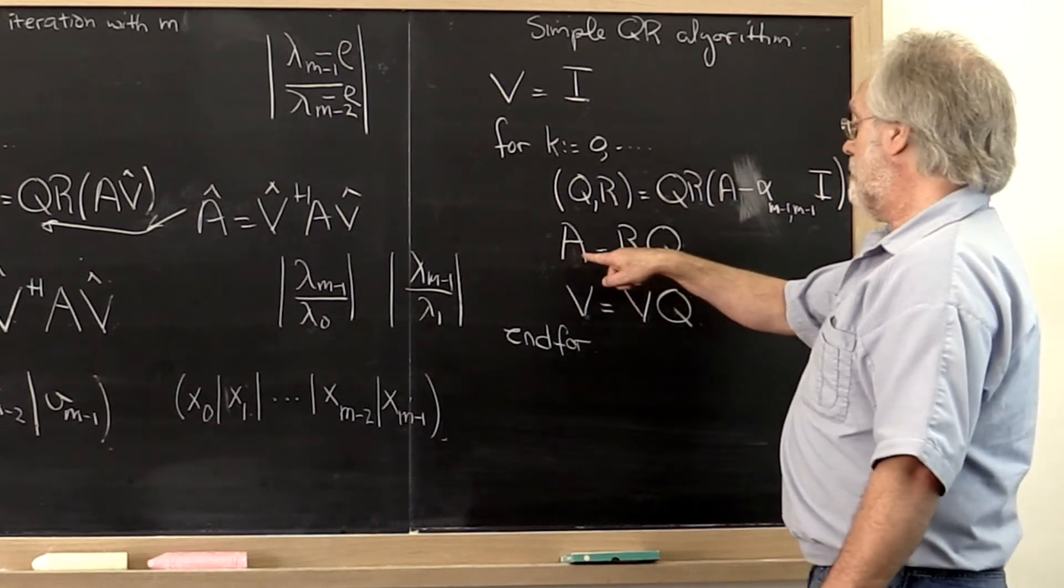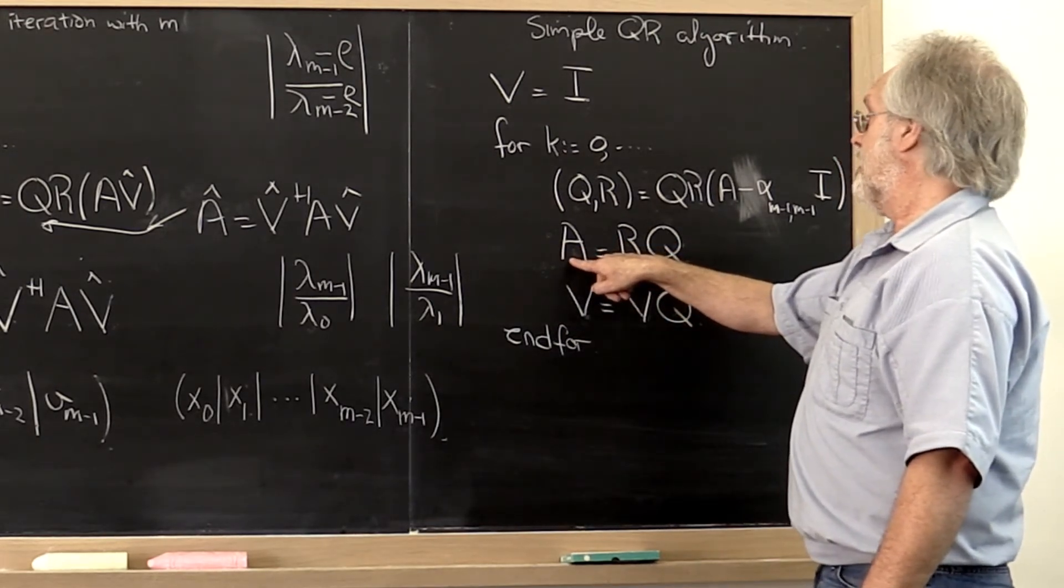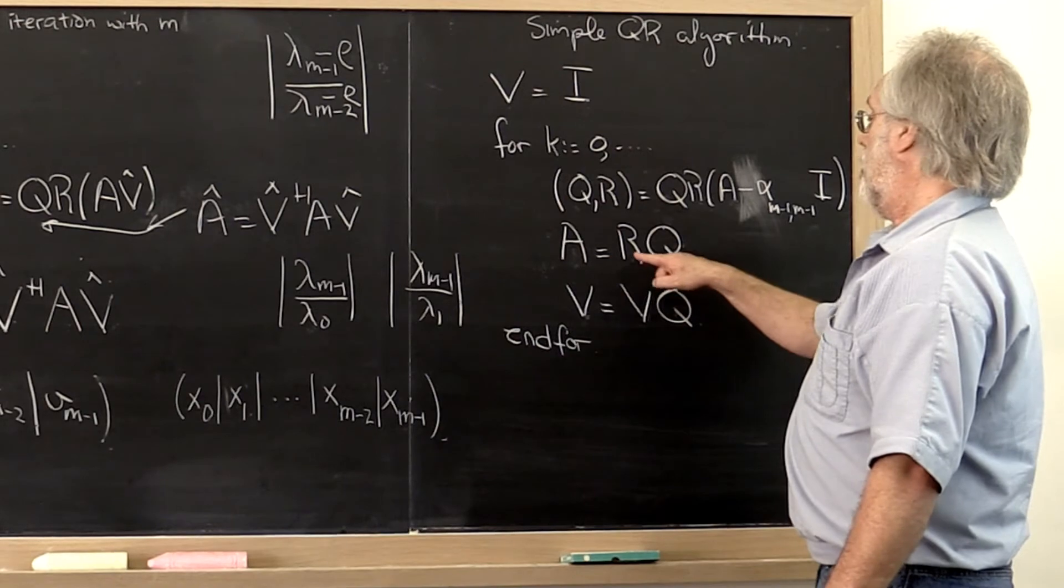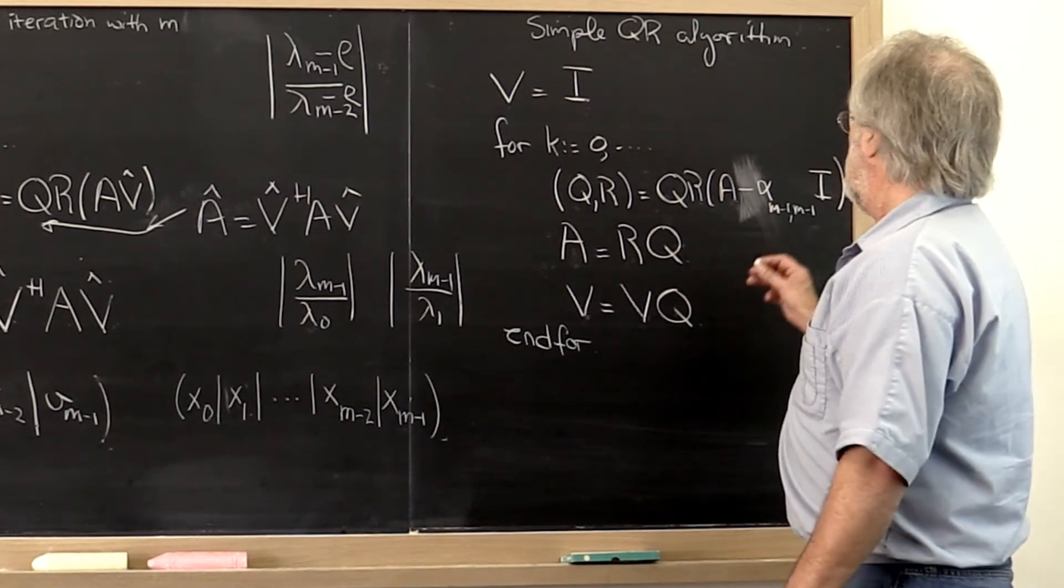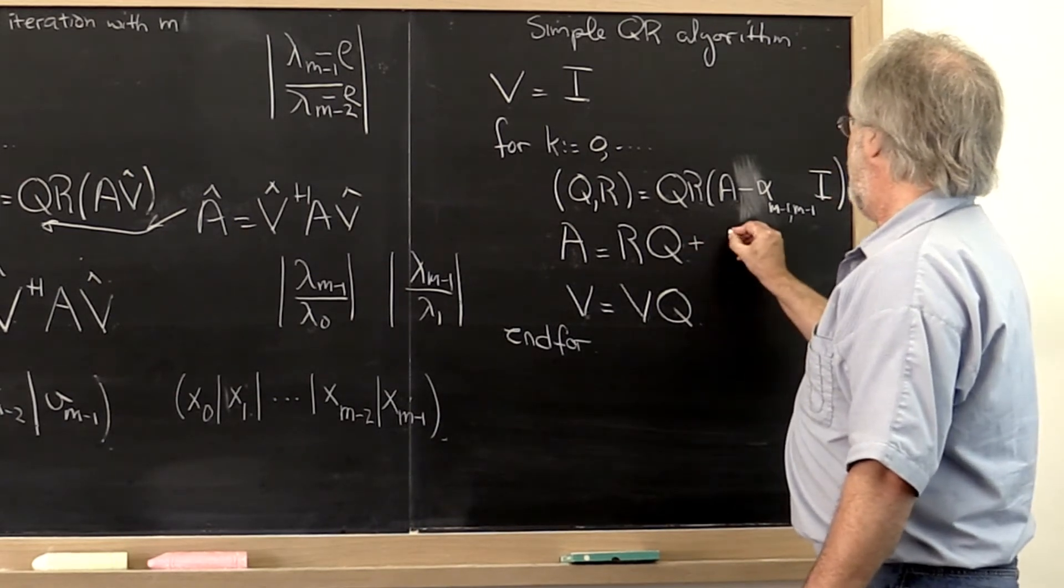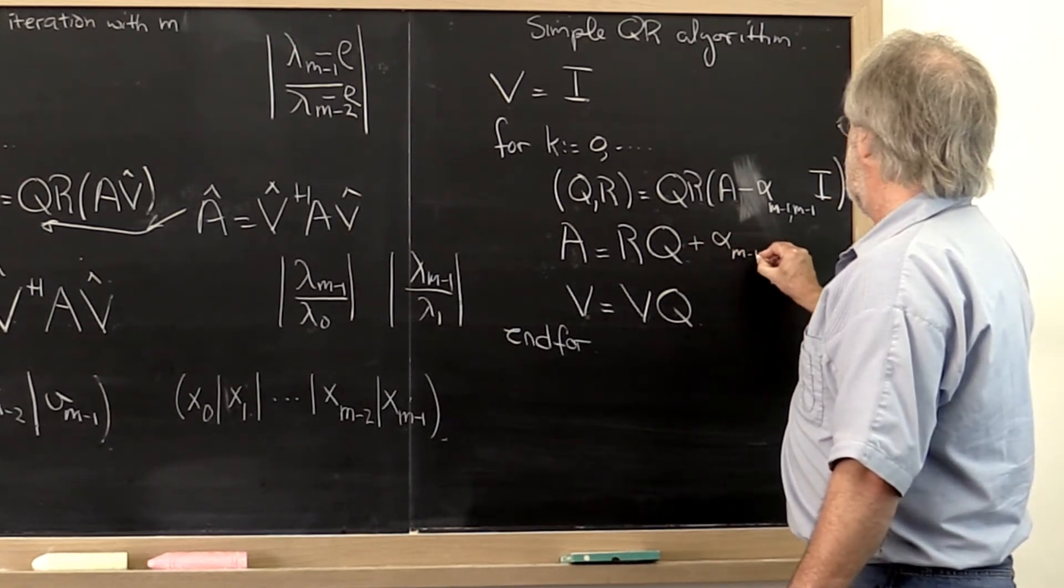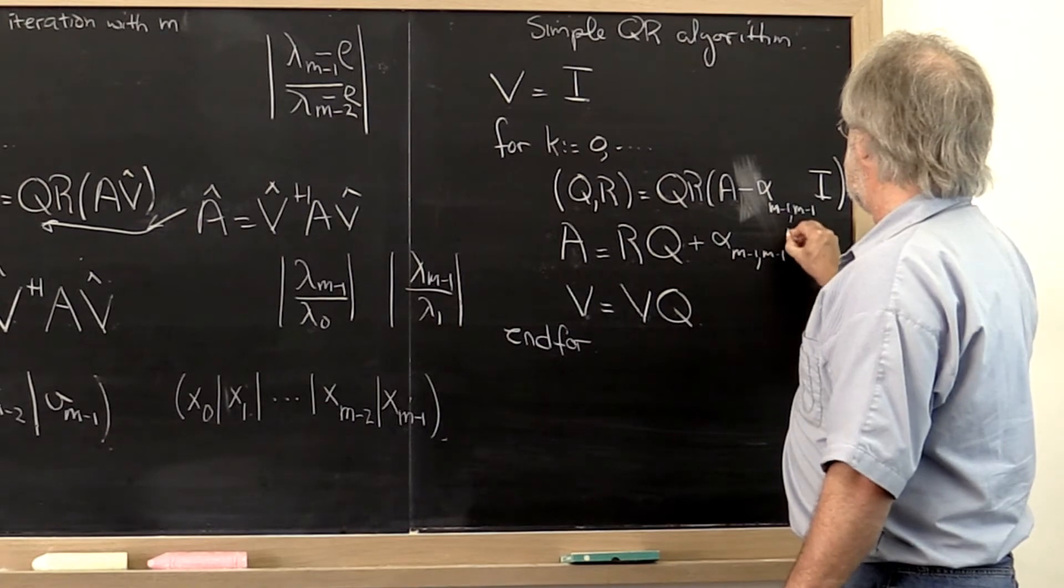And then we simply set our next matrix A equal to R times Q, where we have to add back in alpha m-1 times the identity.